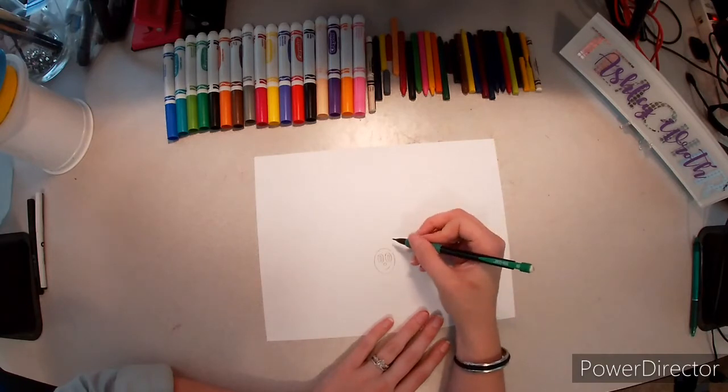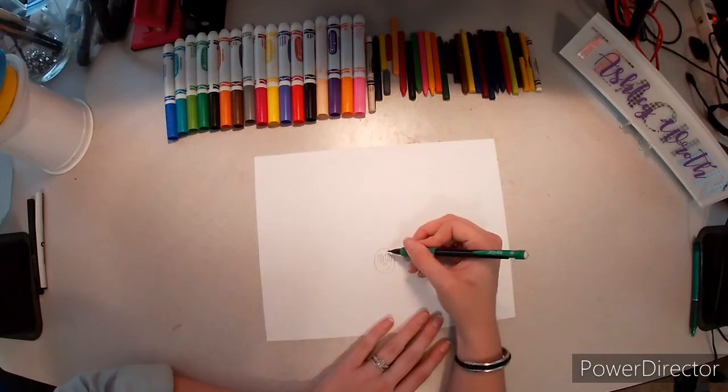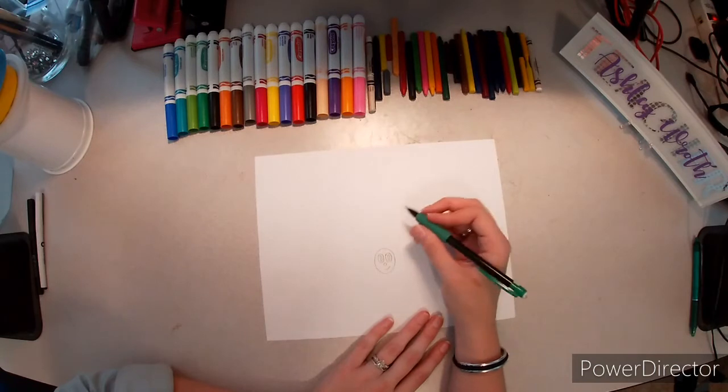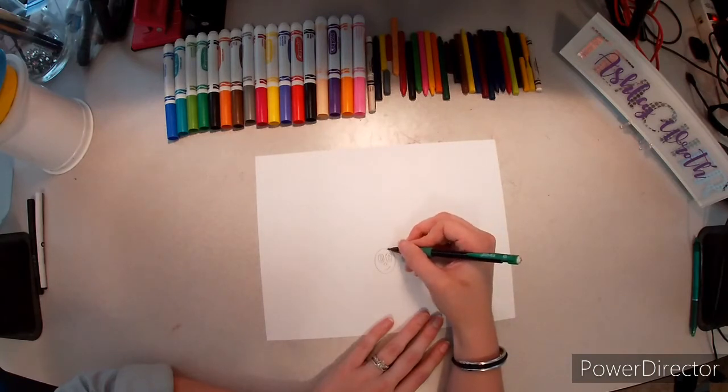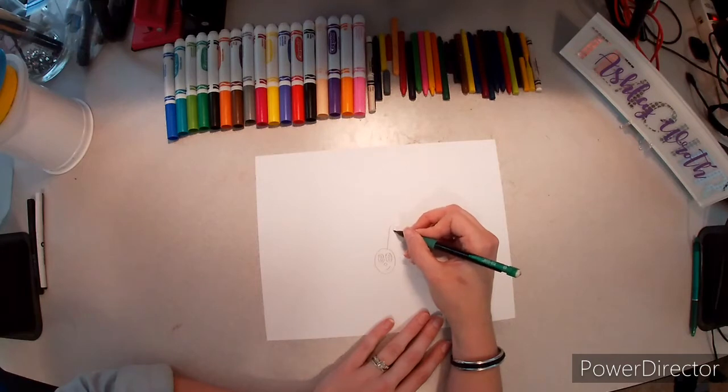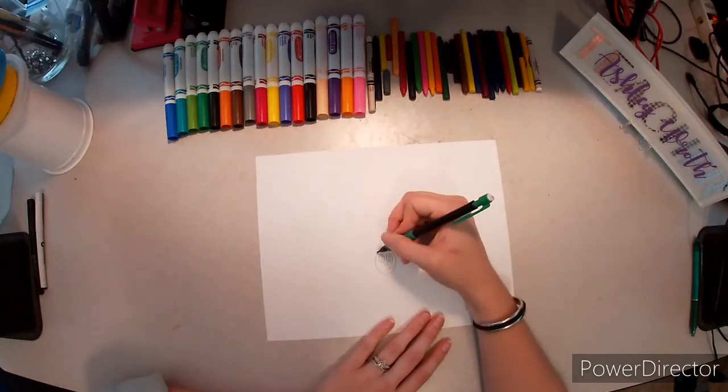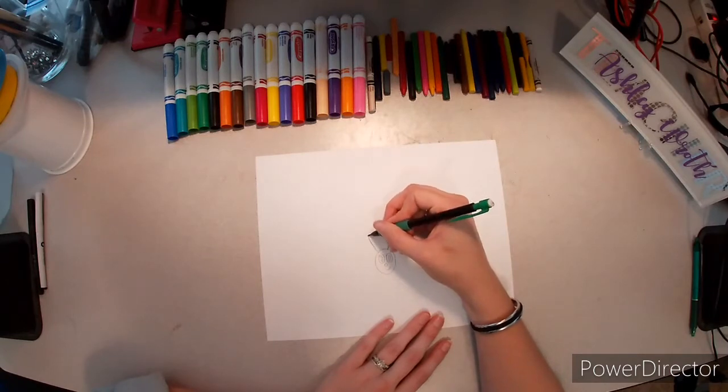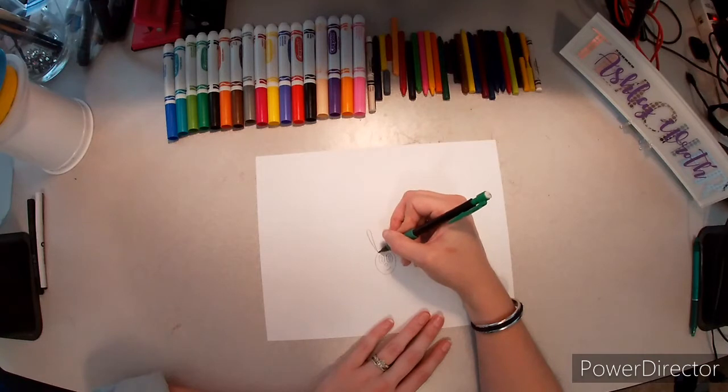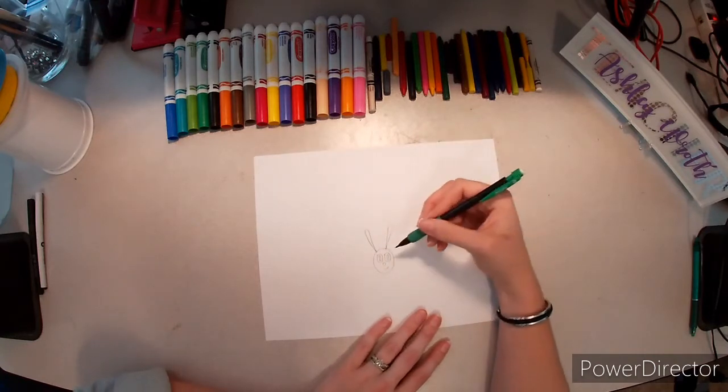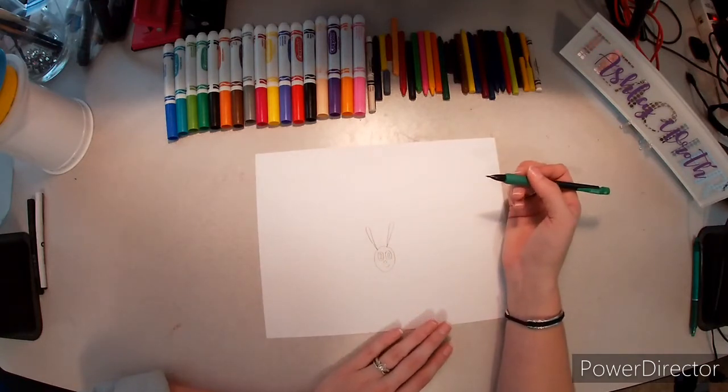Now, for his antennae, they are long, skinny, upside-down raindrops. So, it starts here, goes up, around, and then back to the point. Up, around, and back to the point. Make sure it's really skinny. If you don't get it to a point down at the bottom, it'll look like a bunny.